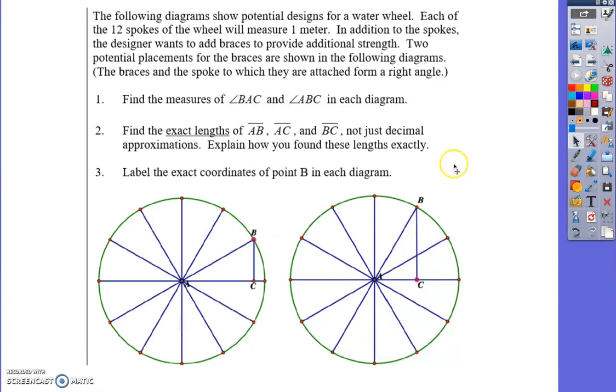Find the measures of angles BAC and BCA in each diagram. We need to find exact lengths of all the sides, not just decimals, and explain how we found them correctly and label the exact coordinates. Go ahead and figure out the central angle for both of those. Pause the video and see what you can figure out.